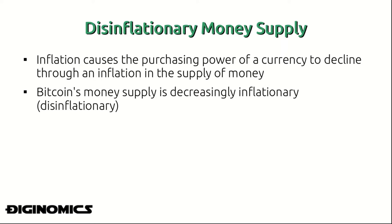One of the first steps when we look at Bitcoin is recognizing that it is a deflationary, disinflationary money supply. Traditionally, our money systems in our national economies are characterized by an inflationary money supply — money that loses purchasing power over time in relation to other goods and services. Something that is deflationary will be less able to purchase the same amount of goods tomorrow than it does today.